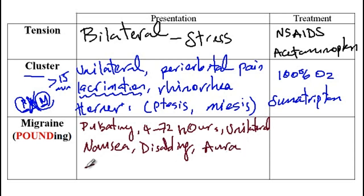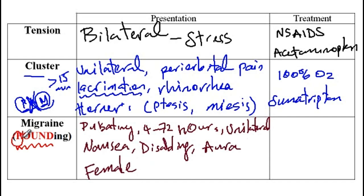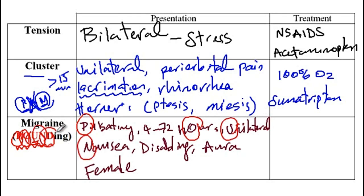In addition, migraines are more common in females and are thought to be due to the hormonal changes associated with menstruation. The memory aid provided here is called POUNDING: P for pulsating, O for 4 to 72 hours, U for unilateral, N for nausea, and D for disabling headache.